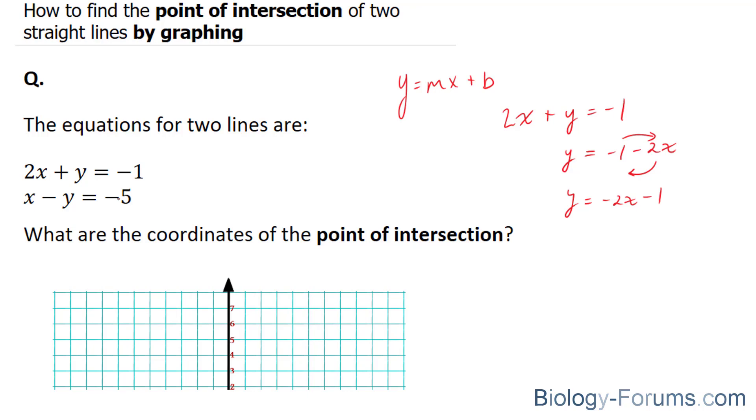I'll do the same thing for this equation. x minus y equals negative 5. And once again, I'll bring this x over, and I end up with negative y equals negative 5 minus x.